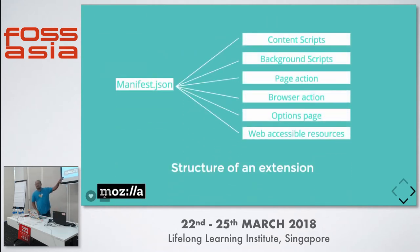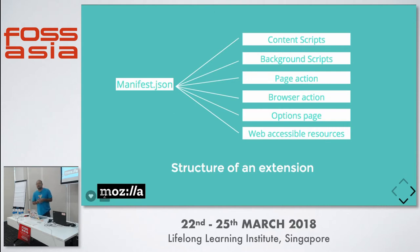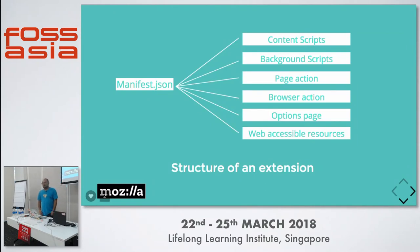This is basically the structure of an extension. Almost everyone knows that a manifest is a structural file for everything — may it be an Android app, an iOS app, or an add-on. Manifest.json is the file which holds the structure of the add-on. There are things called content script, background script, page action, browser action, options page, and web accessible resources. In a few minutes, it will all start making sense.